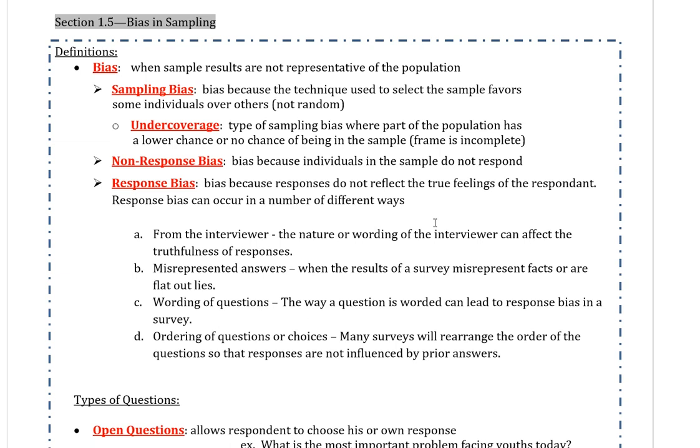However, in each of those methods that weren't simple random samples, we always had some indication of bias and we didn't really define it, but we will now. Bias is when sample results are not representative of the population, and bias can show up in a lot of different forms.